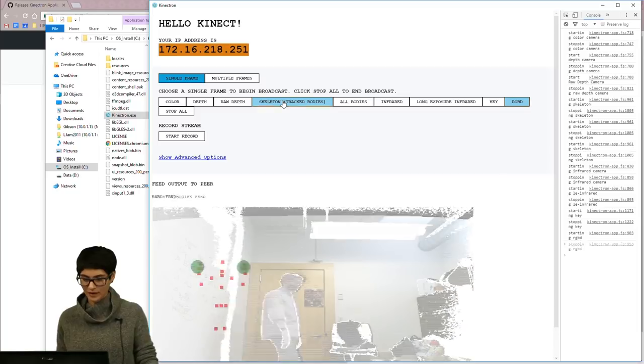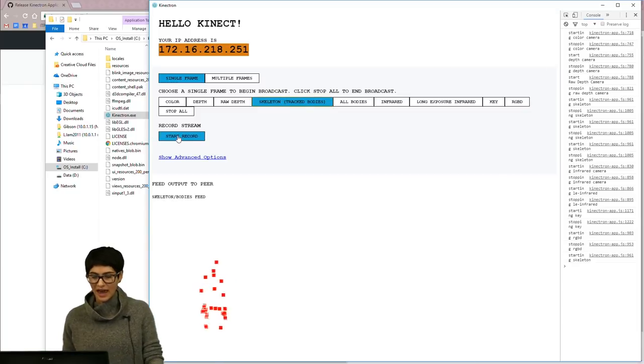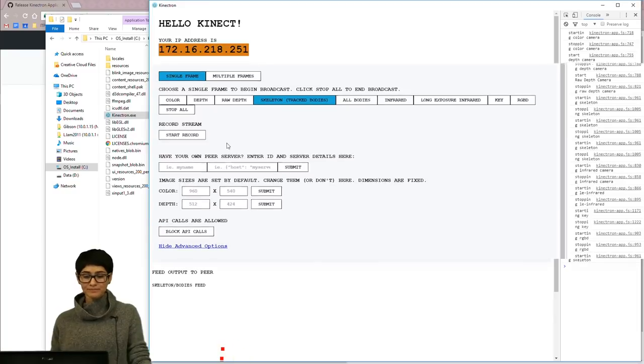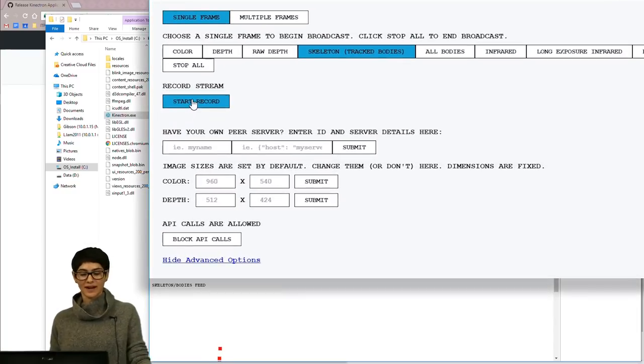Cool. So we'll go back to the skeleton. And then just real quick, I wanted to walk you through the advanced options. Oh, and I can't forget, there's a record button here. So you can record data coming in, whether it's skeleton data or the image data, depth data, and replay it back on your website later on if you don't want to be working with live data.